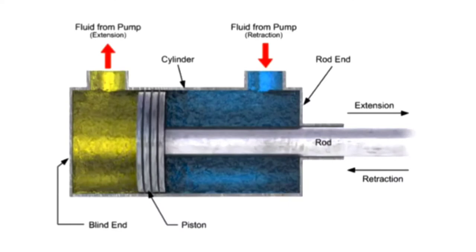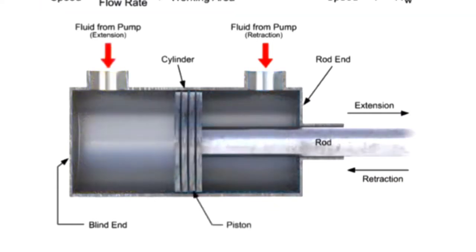The speed at which the piston extends and retracts is calculated using the volumetric flow rate times the area for the incoming fluid. Since each side of the cylinder has a different working area, each side experiences a different speed.